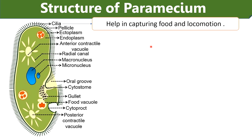Cilia: Many small hair-like cilia are attached throughout the pellicle. An approximate cilium has 0.25 micrometer diameter and 20 micrometer length. The main function of cilia is to help in capturing food and locomotion. The intraciliary system helps in forming cell organelles during cell division.